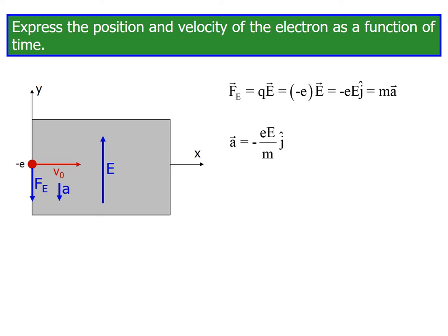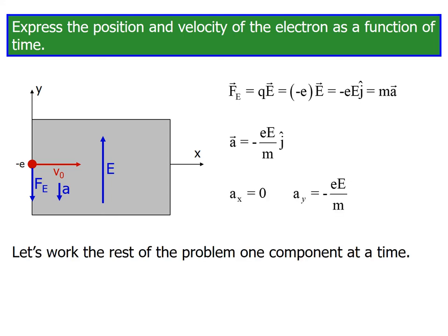Acceleration a equals eE divided by m j hat. Here we have acceleration: in x direction, acceleration is zero, and ay which is minus eE divided by m.